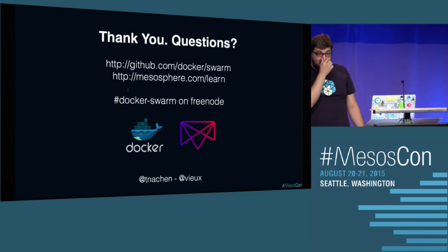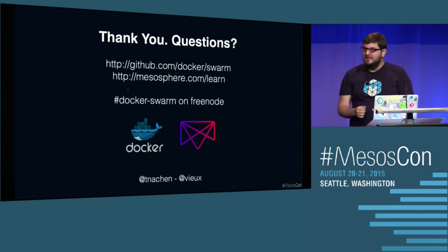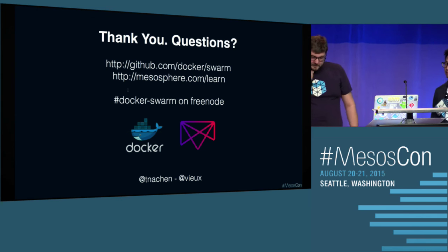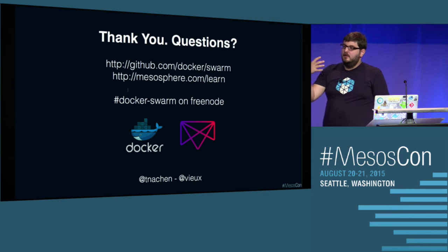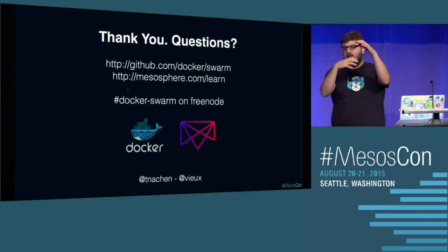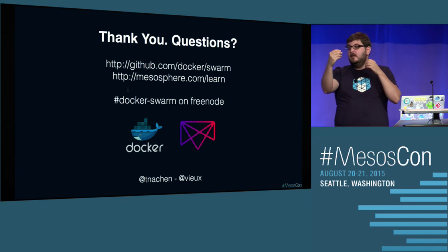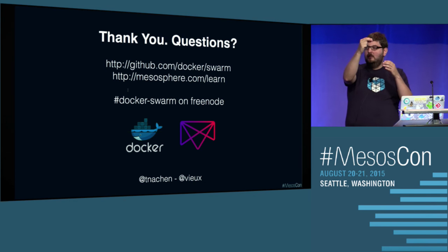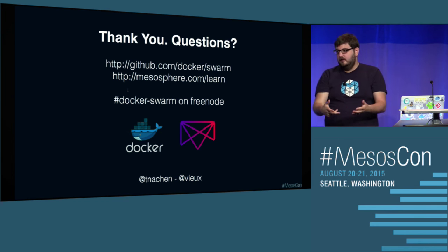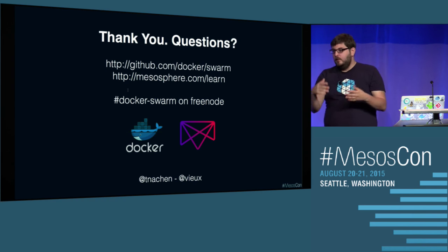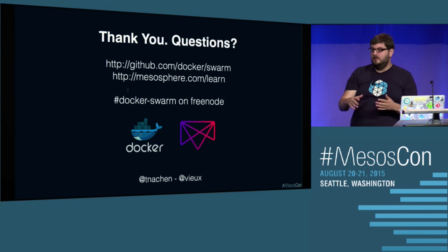Q&A: The question is why use Swarm if there's already Docker integration in Mesos. With Mesos you can start Docker containers using the Docker containerizer, but the full Docker experience isn't native. With Swarm, you take the Docker CLI, talk to Swarm, which talks to Mesos, using Mesos's high scalability to ultimately start Docker containers. You're using Docker on your laptop with the Docker client. When it's running, it's using the Docker daemon. But in the middle, all the scaling decisions and complexity are handled by Mesos.